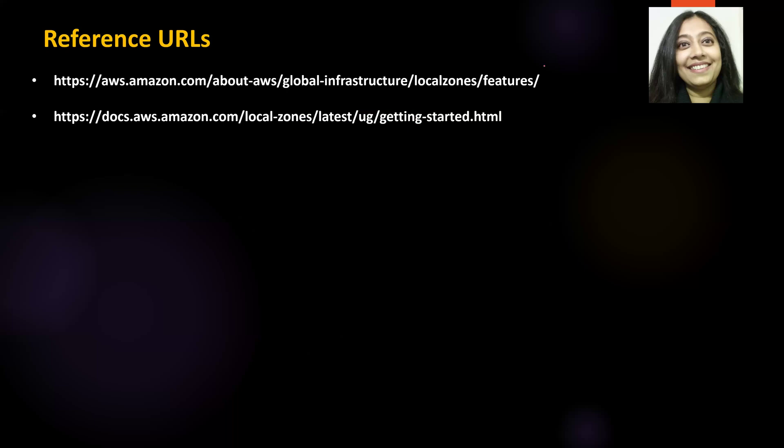These are some reference URLs. I would recommend that you visit these URLs, especially the first one. I have it opened and we will be using the first one in this lab as well, because it talks about what kind of infrastructure you can provision in different local zones. These URLs also have additional information on this topic, so do visit them. I will have them posted in the description of this video.